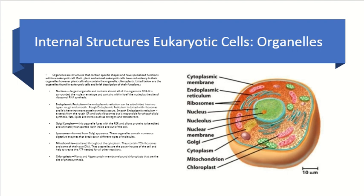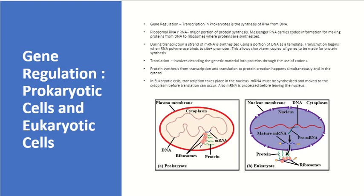On the inside of eukaryotic cells, organelles have specific functions. The endoplasmic reticulum helps form initial proteins. The Golgi apparatus processes, modifies, and sends out proteins. And there is also the nucleus, which protects the DNA.